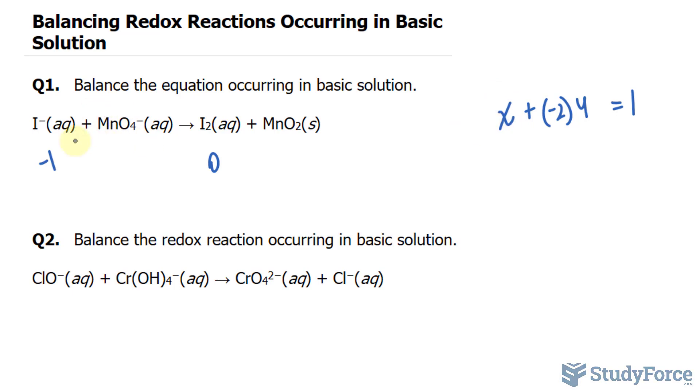we'll know the oxidation state of Mn. Let's go ahead and do this. This becomes negative 8, and solving for x, we get positive 7. So this is positive 7, and that is minus 2.